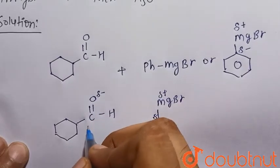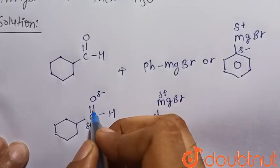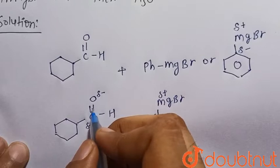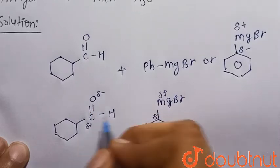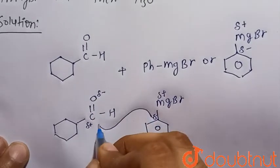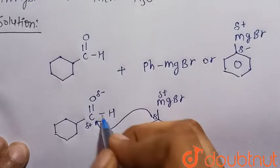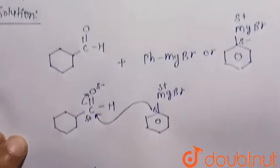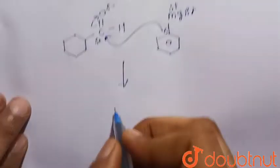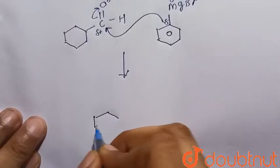And this carbon becomes electron deficient because it withdraws electron density toward oxygen, so it becomes electron deficient. So this delta negative carbon will attack this electron deficient carbon, and this bond breaks toward this side. So there is the formation of this compound.